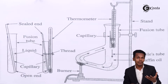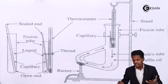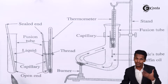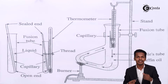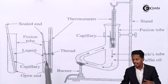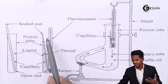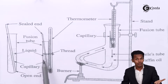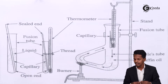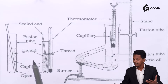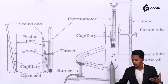Next, we take a capillary tube and seal it from one end — the sealed end is visible here — while the other end remains open. The capillary tube is inserted such that the open end is inside the fusion tube and the sealed end is outside. This fusion tube, which is about 5 to 6 centimeters long, is then tied to a thermometer with a very fine thread.